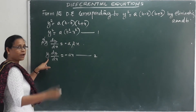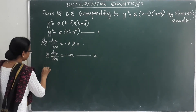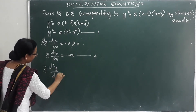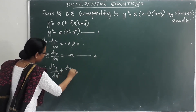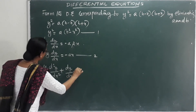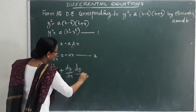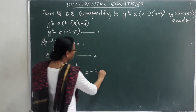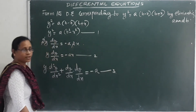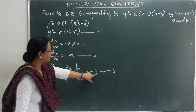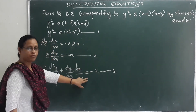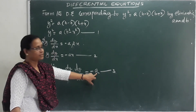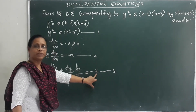Differentiating using the product rule, we get: y·(d²y/dx²) plus (dy/dx)² equals −a. Since minus a is a constant, we use equations 1 and 2 to eliminate it.